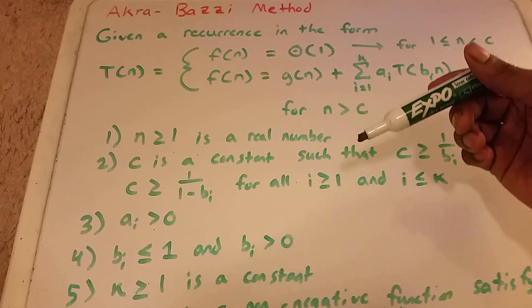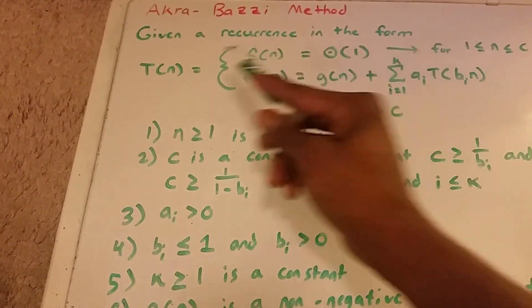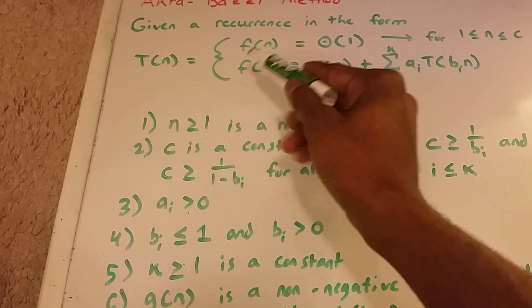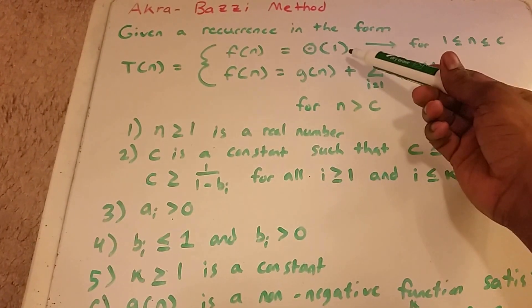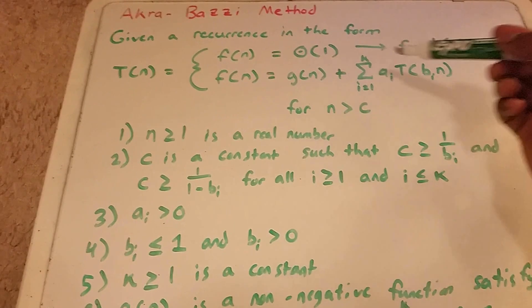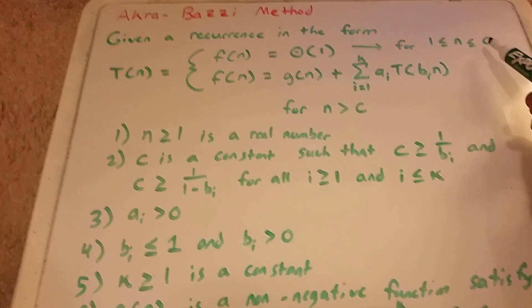And here it is, it's a lot. So given a recurrence in this form, where T of n equals F of n, which equals theta of 1, which is some constant, for all n between 1 and that constant,